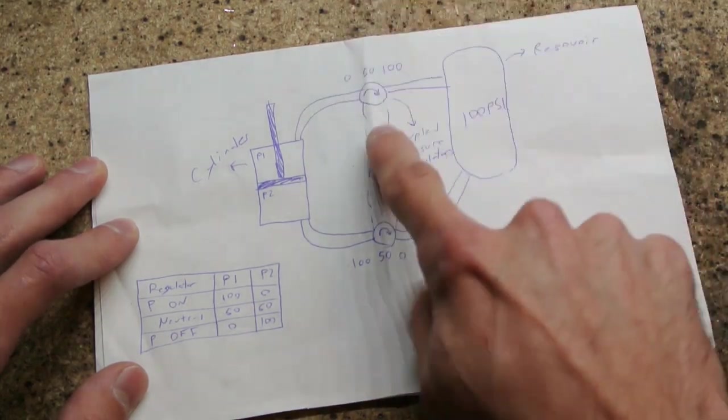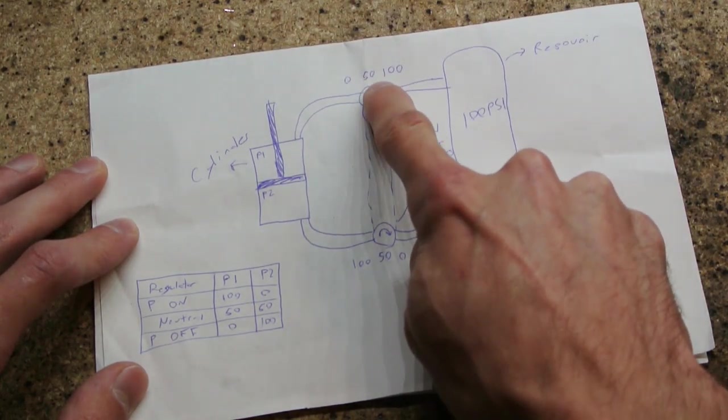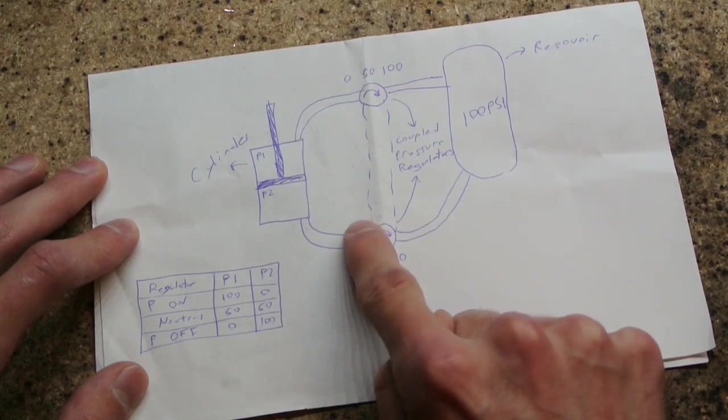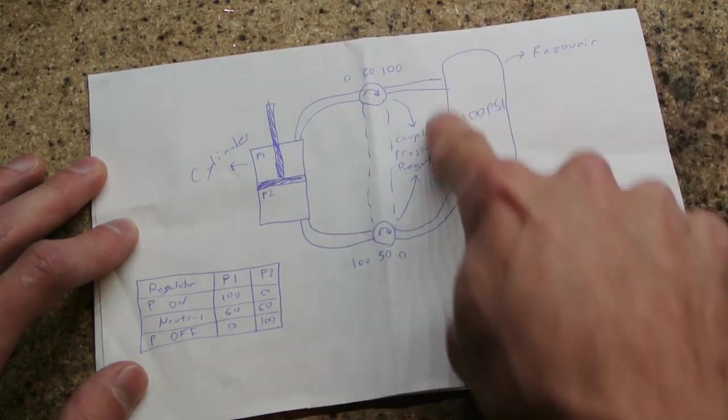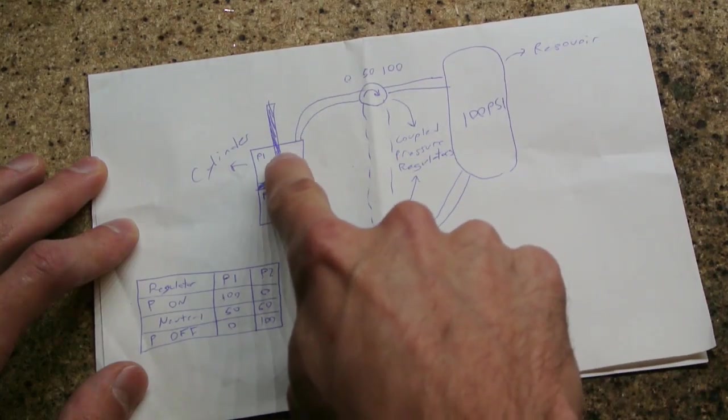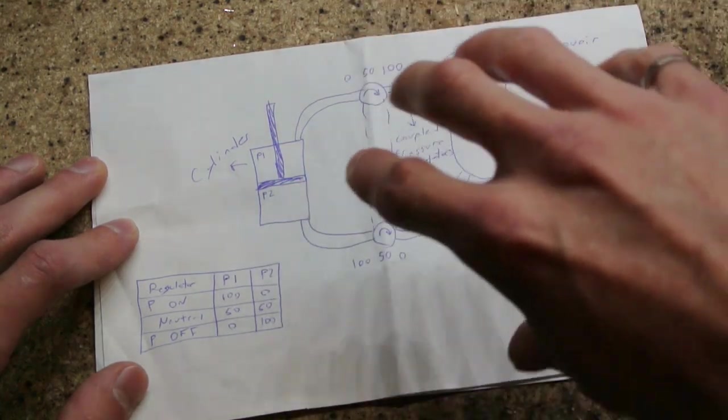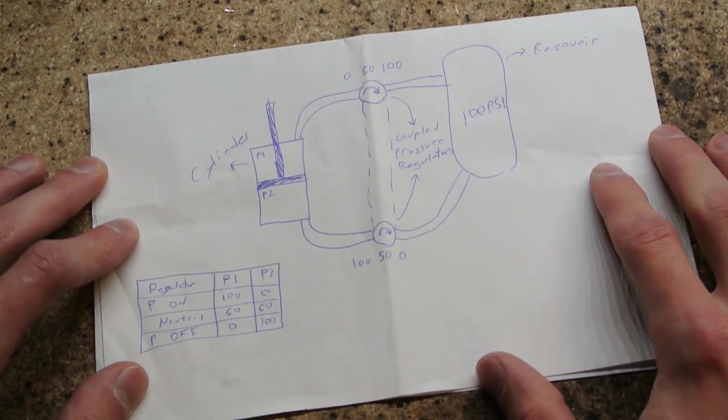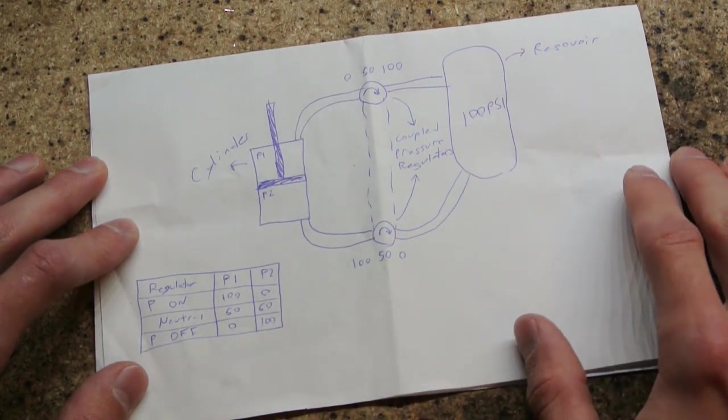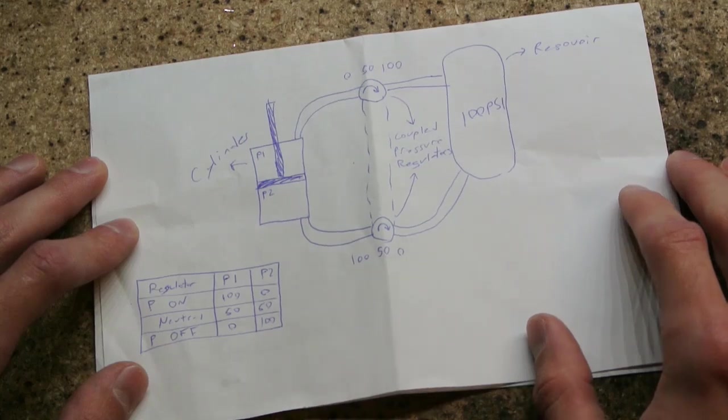But as soon as you turn this, you can turn this one up to 100 PSI, which in turn turns this one down to 0 PSI, which suddenly means you're still at your 100 PSI system pressure, but it's all in the top and not in the bottom. This way you can actually control the position up and down using the pressure regulators. So let's build one and see how it works.